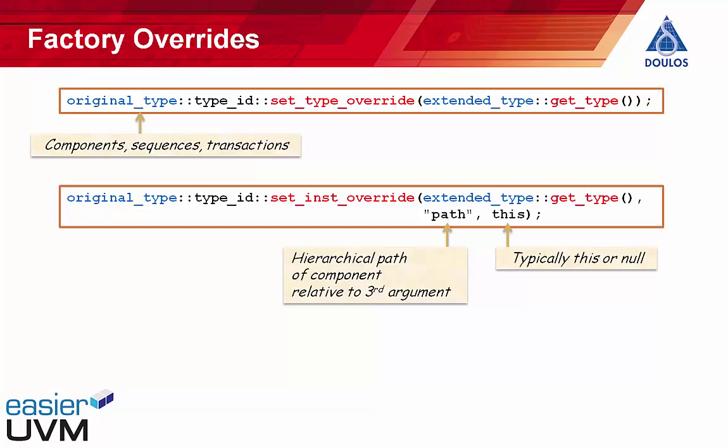A feature of these factory overrides is that types are specified using SystemVerilog type names — original type and extended type are SystemVerilog types, meaning the types have to be known at compile time. Sometimes, however, you want to do factory overrides where the types are not known at compile time. Maybe you want to compile new classes in addition to the original ones and use them to replace objects of the original classes. To do that, you need to go and find the UVM factory object itself.